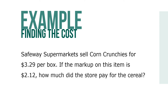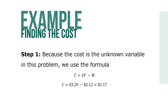One more example. Safeway Supermarkets sells corn crunchies for $3.29 per box. If the markup on this item is $2.12, how much did the store pay for the cereal? Because the cost is the unknown variable, we use the formula C equals SP minus M, which means we take $3.29, the selling price, minus $2.12, the markup, to equal a total cost of $1.17.